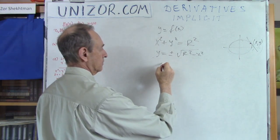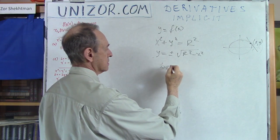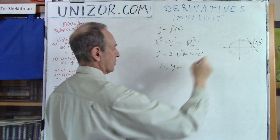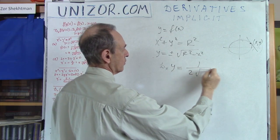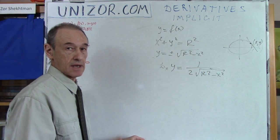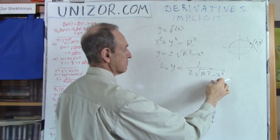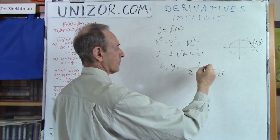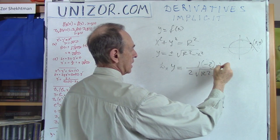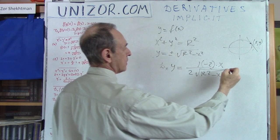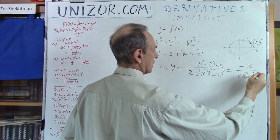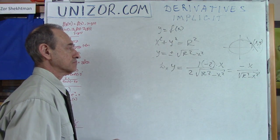To find the derivative of y equals the square root of r squared minus x squared, using the chain rule: the outer function is the square root, giving one over two times the square root of r squared minus x squared, and the inner function r squared minus x squared has derivative negative two x. Simplifying, the derivative is negative x divided by the square root of r squared minus x squared.